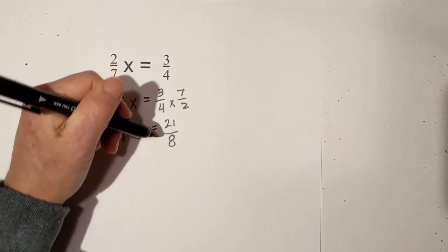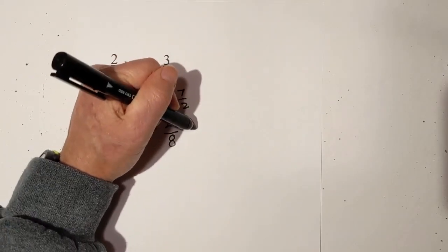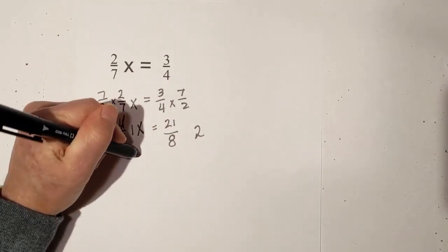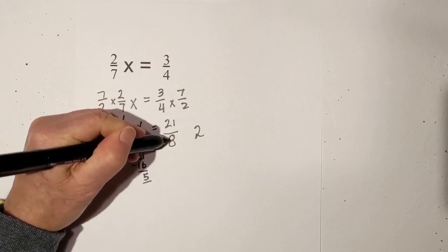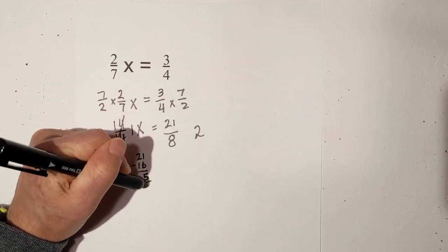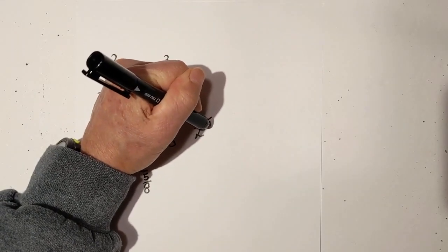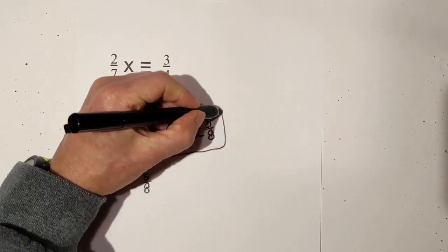If you would like, that can be converted. 8 goes into 21 two times, which is 16. 21 minus 16 is 5, and we have 8 as the denominator, so that becomes 5 eighths. It is 2 and 5 eighths. There's our answer.